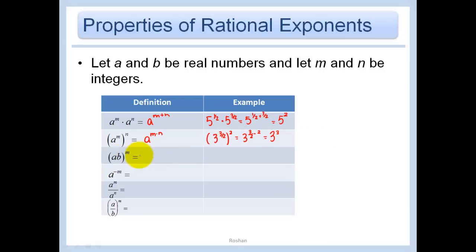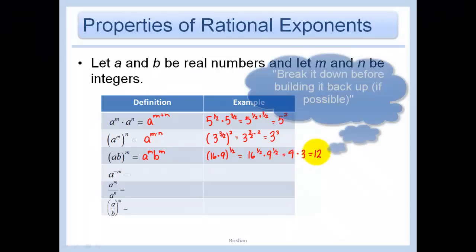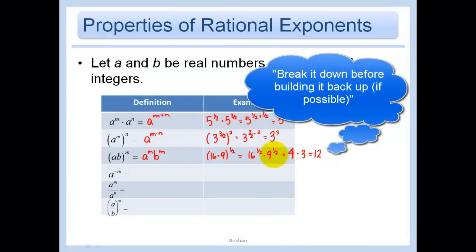a to the m power is a to the m power times b to the m power. Let's do 16 times 9 to the 1 half. Just like we were doing in the last section — break it down before you build it back up. We get 16 to the 1 half times 9 to the 1 half. 16 to the 1 half is just 4, and 9 to the 1 half is just 3. And 4 times 3 is 12.